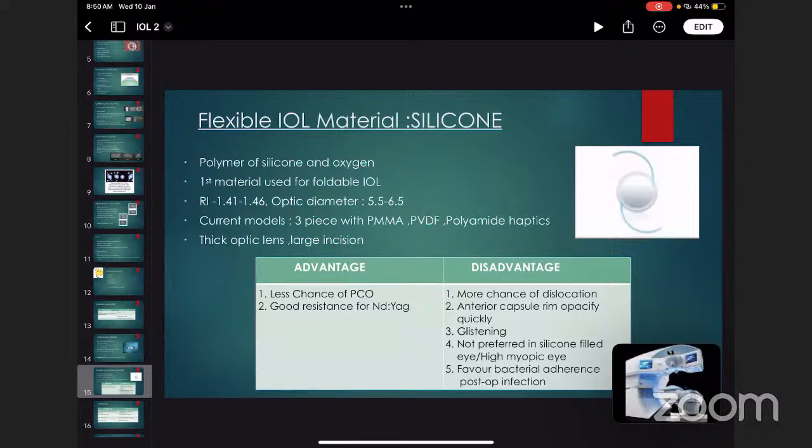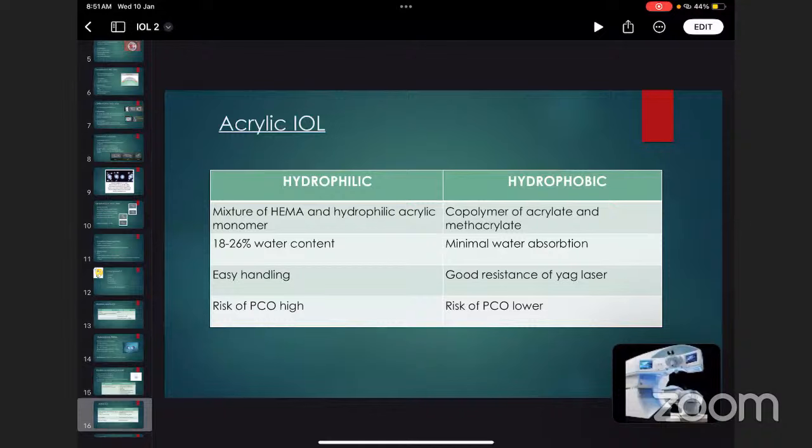Flexible IOL material: first is silicone. Silicone is a polymer of silicon and oxygen. It's the first material used for foldable intraocular lens with refractive index 1.41, optic diameter 5.5 to 6.5. Current models available are 3-piece with PMMA, PVDF, or polyamide haptics. It has thick optic lens and large incision. Advantages: less chance of PCO, good resistance to Nd:YAG laser. Disadvantages: more chance of dislocation, anterior capsule opacifies quickly, glistening, not preferred in silicone-filled eye or high myopic eye, and favors bacterial adherence post-op infection. Nowadays, we mostly do not use silicone IOLs.